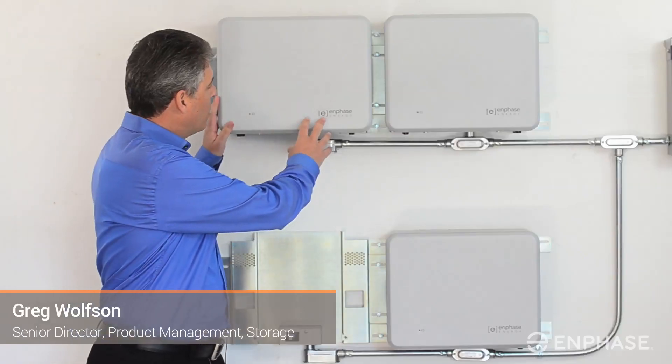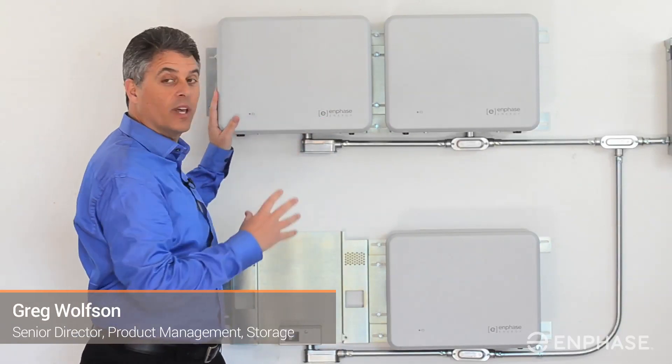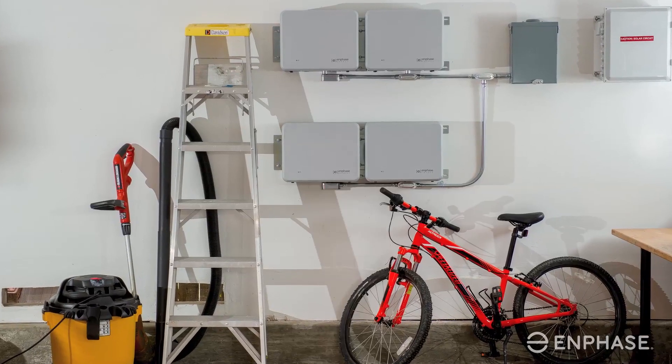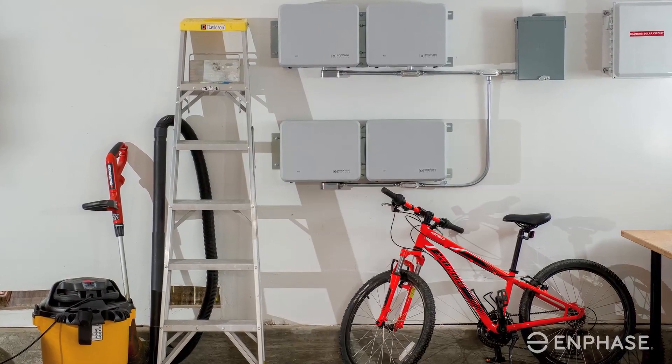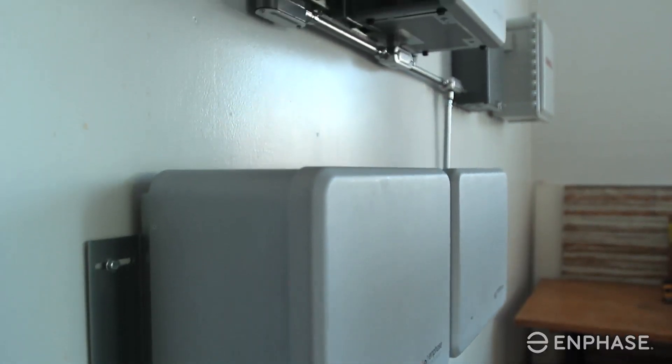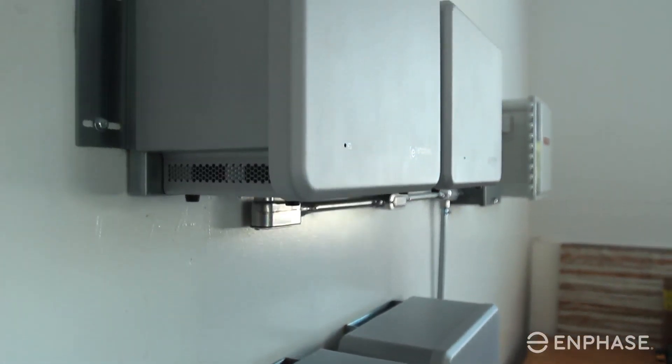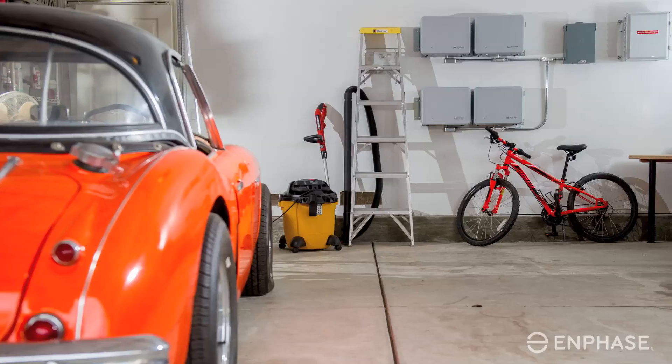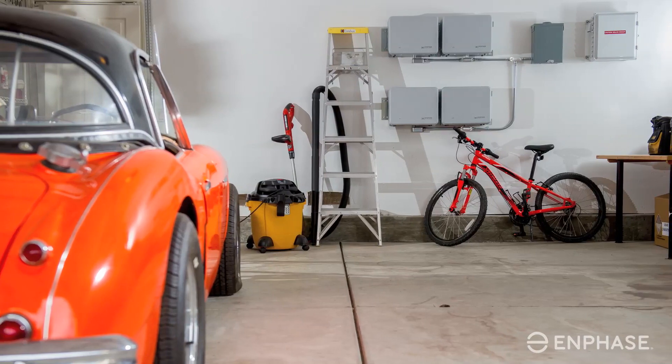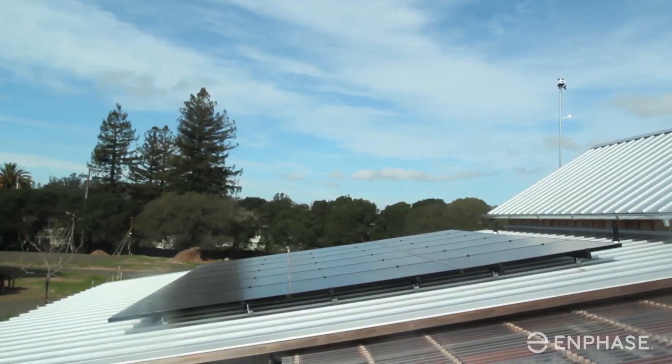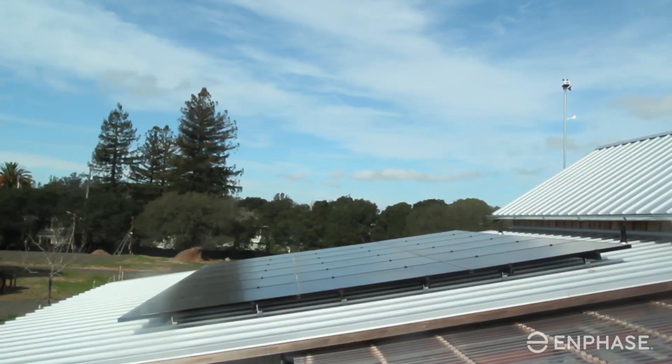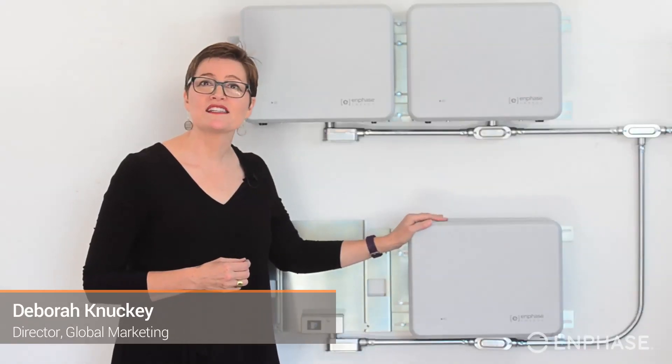The key component for Enphase's storage system is it's just that. It's a system. It's not just a battery, but it's an integrated storage unit which has both the storage chemistry as well as the power electronics, the inverter, all integrated with one unit. So it's very simple, very easy to use and very safe. If you have another brand of solar, you can still retrofit with the Enphase storage system because it's compatible with any solar system that you have.